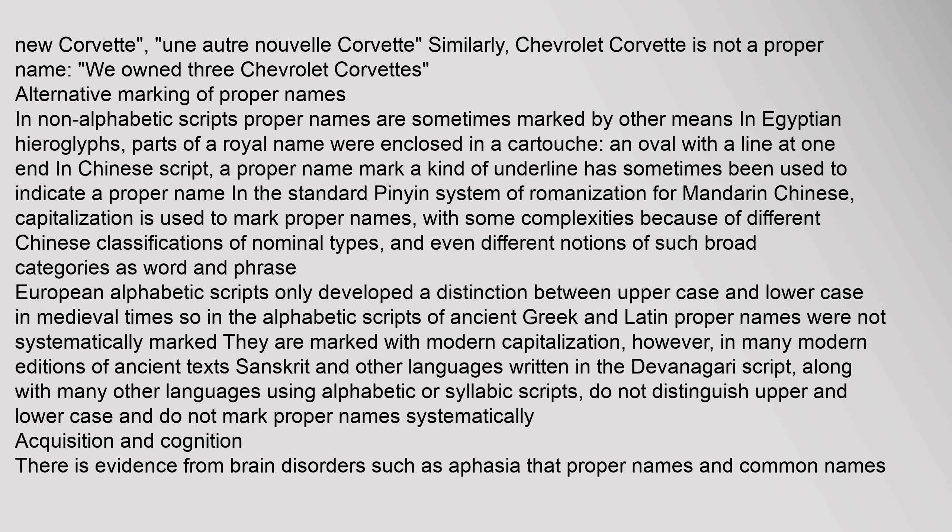Proper names are sometimes marked by other means. In Egyptian hieroglyphs, parts of a royal name were enclosed in a cartouche — an oval with a line at one end. In Chinese script, a proper name mark, a kind of underline, has sometimes been used to indicate a proper name. In the standard Pinyin system of romanization for Mandarin Chinese, capitalization is used to mark proper names, with some complexities because of different Chinese classifications of nominal types. European alphabetic scripts only developed a distinction between upper case and lower case in medieval times, so in the alphabetic scripts of ancient Greek and Latin, proper names were not systematically marked. Sanskrit and other languages written in the Devanagari script, along with many other languages using alphabetic or syllabic scripts, do not distinguish upper and lower case and do not mark proper names systematically.